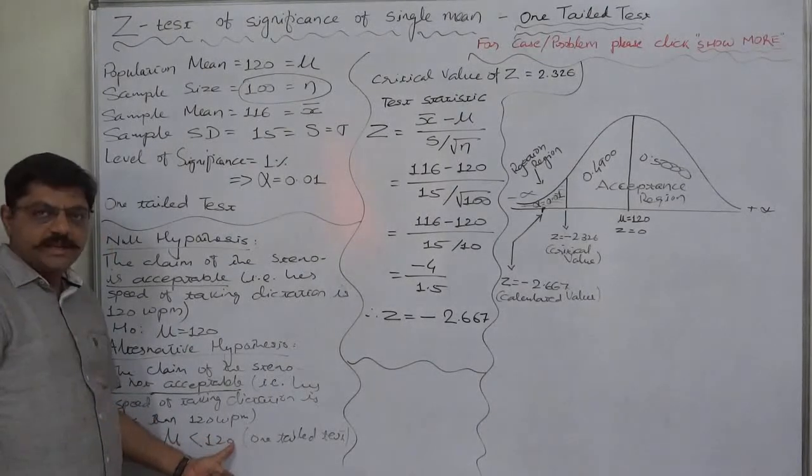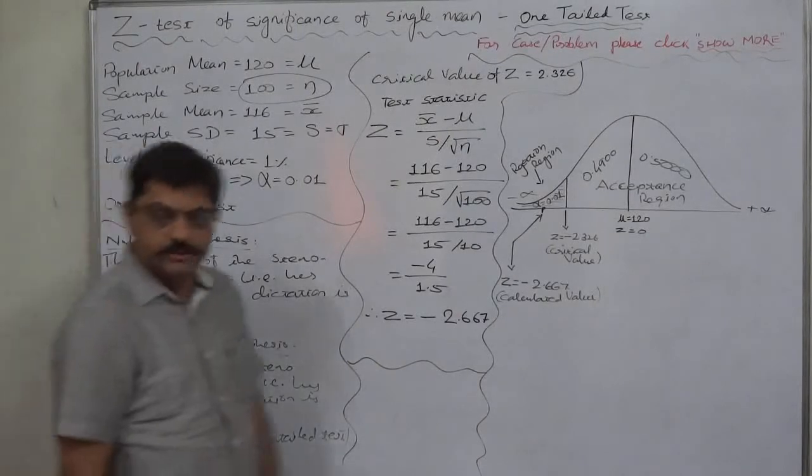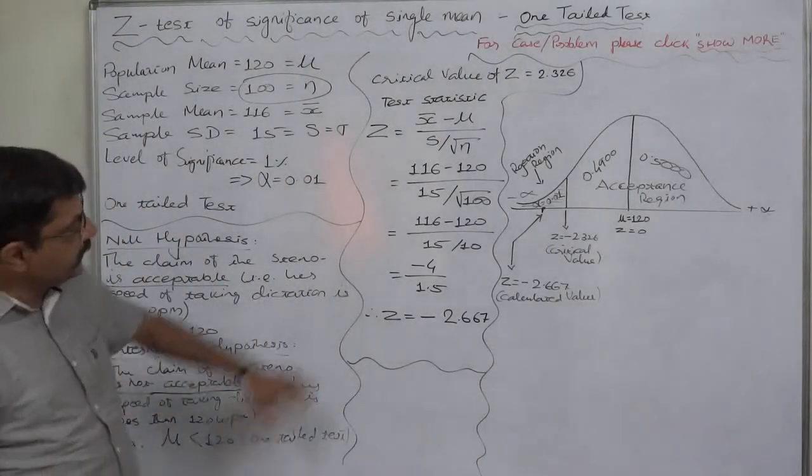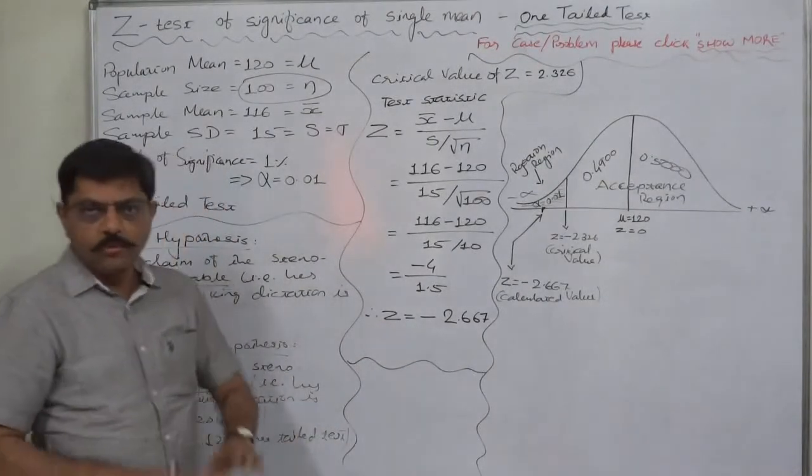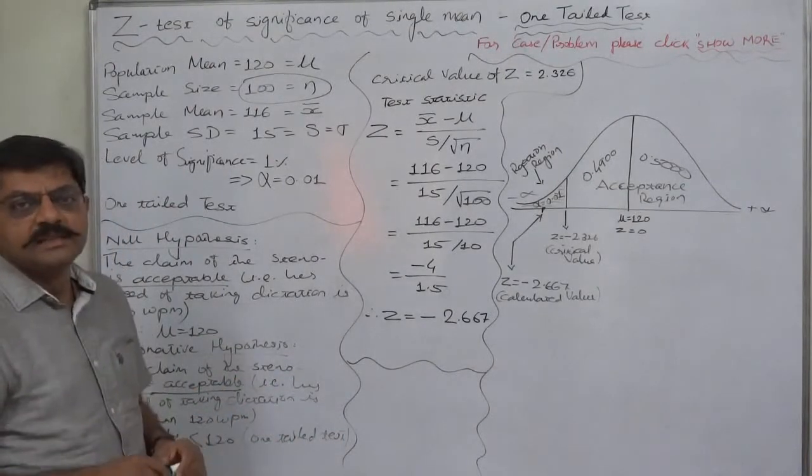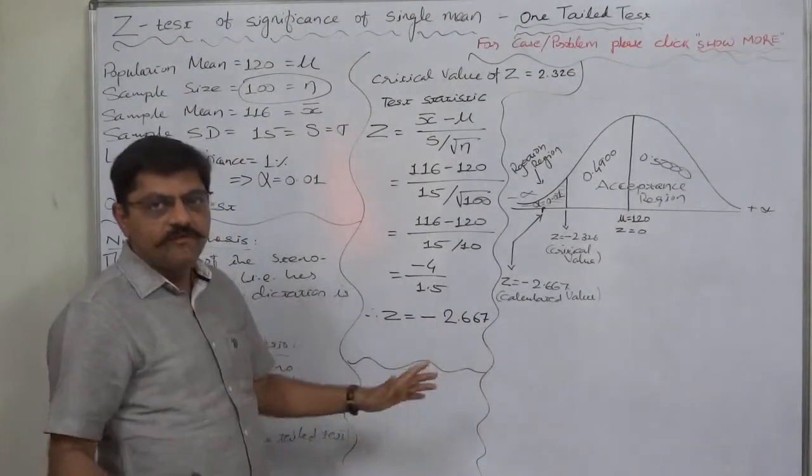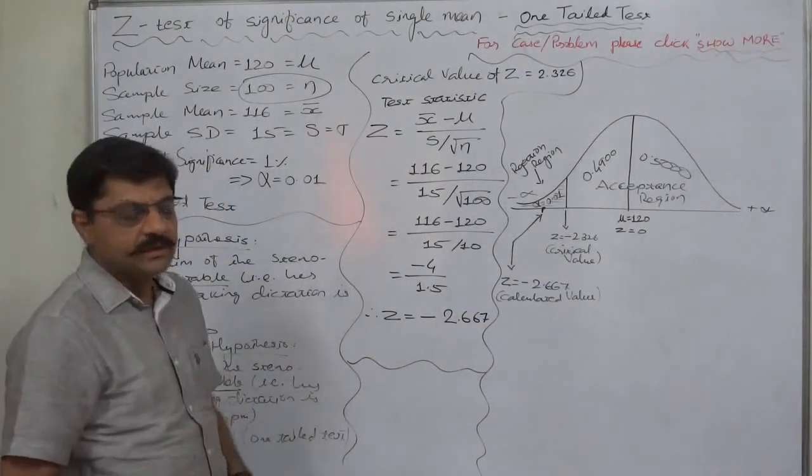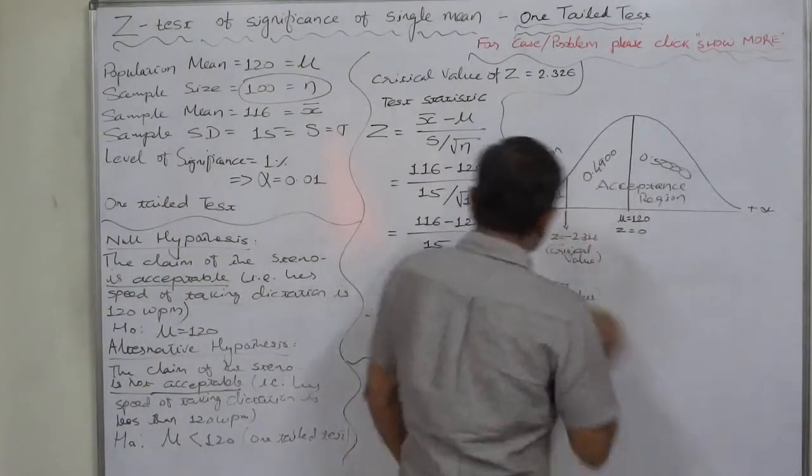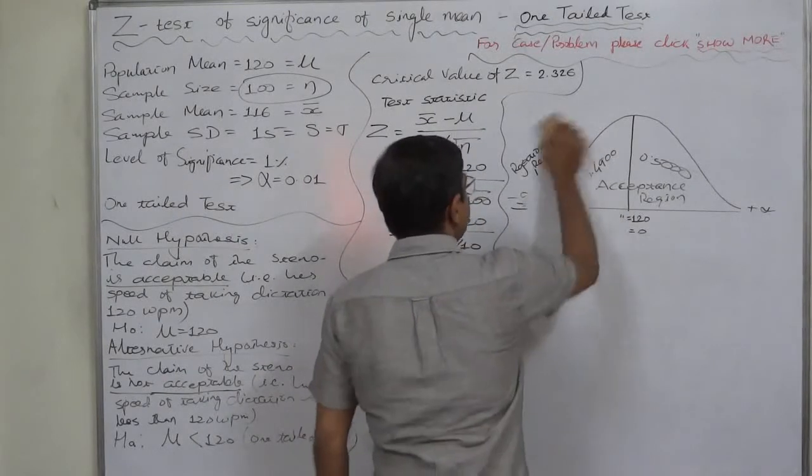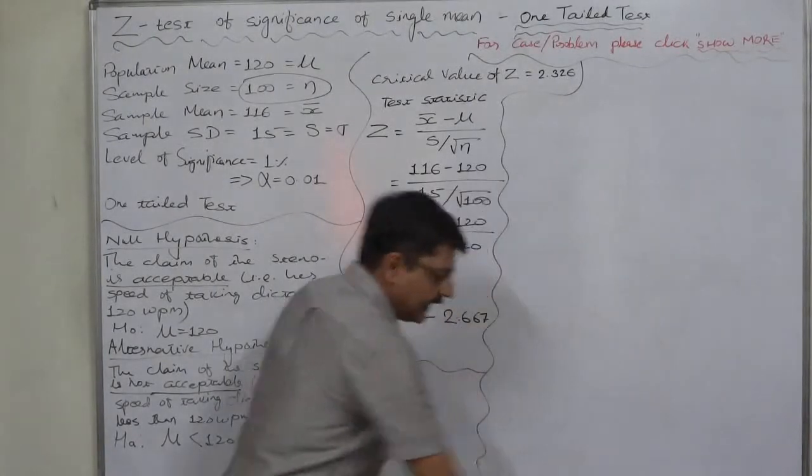What is her claim? She can take dictation at a speed of 120 words per minute, but according to our statistical analysis, we reject her claim because the calculated value falls in the rejection region. We can conclude that her speed of taking dictation is less than 120 words per minute. So to use this method also, we have to calculate the value of z. More or less, these two methods are the same. The comparison style is different. Now another method is p-value method.